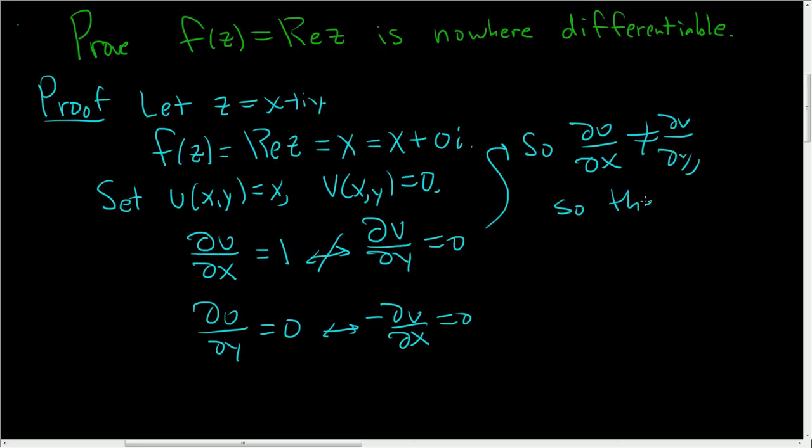So the Cauchy-Riemann equations do not hold, and they don't hold at any point. 1 is never equal to 0, so this always works. This works for every complex number. So since the Cauchy-Riemann equations do not hold at any complex number,